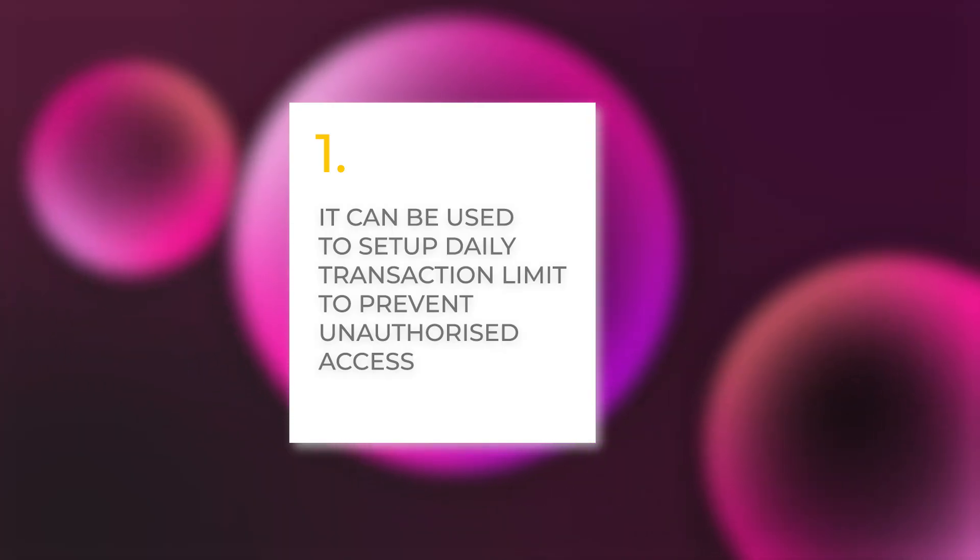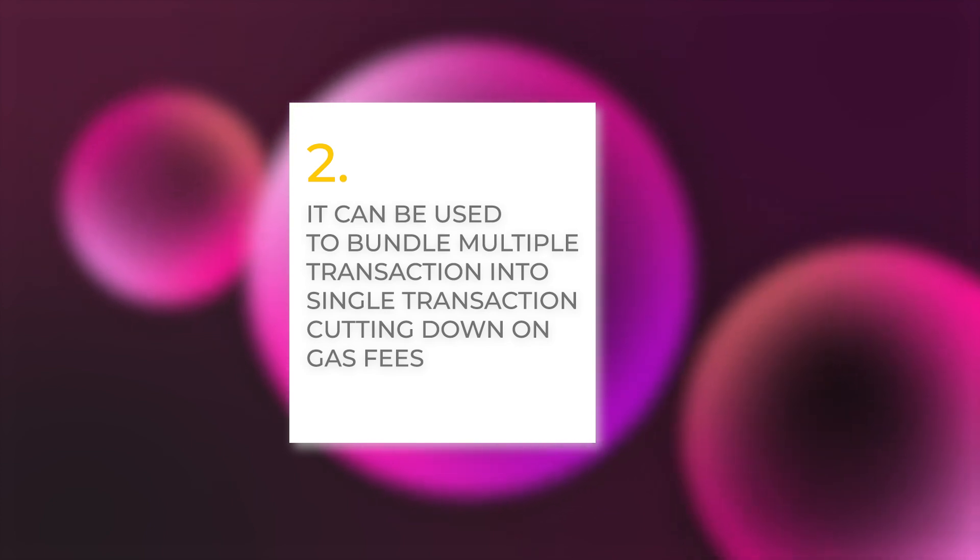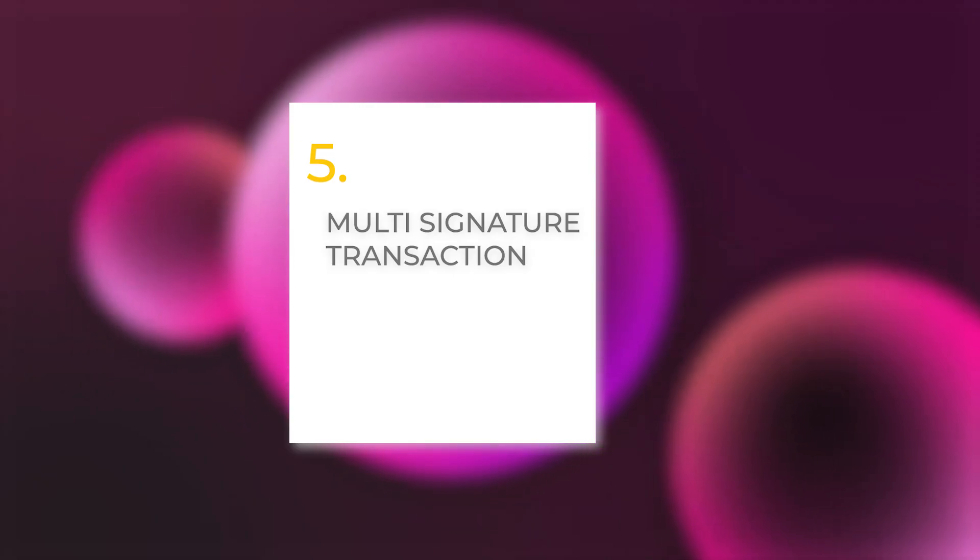Other practical ways account abstraction can be used include: number one, setting up daily transaction limits to prevent unauthorized access — very useful for security; number two, bundling multiple transactions into a single transaction to cut down on gas costs; number three, account recovery — if you lose your account, account abstraction gives you recovery options; number four, automated payments, so you can set up recurring payments such as rent or subscription fees; and number five, multi-signature transactions — if you're a business or a DAO, you can require multiple signatures for shared wallets. These features make the whole blockchain experience more seamless and user-friendly.